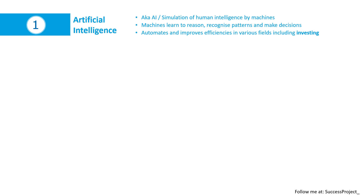The first one is artificial intelligence, also called as AI. In the simplest form it is nothing but simulation of human level of intelligence by machines, where machines are able to learn, reason, recognize patterns, and even start making decisions. Because of all this, it is able to automate and improve the efficiency of our daily activities in different fields, including investing.